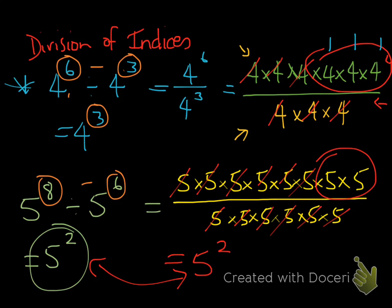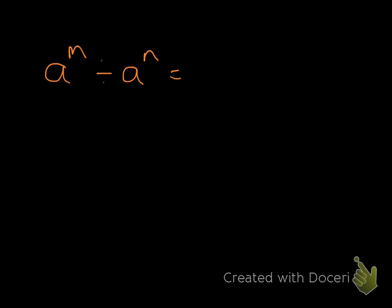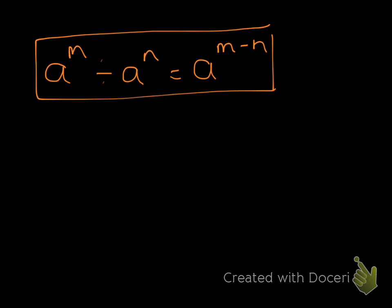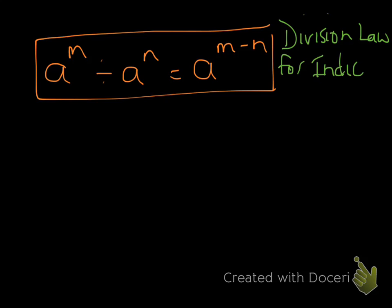So we can come up with a new law that represents quotients or divisions of indices. Just like I did with the multiplication law, we use variables a, m, and n. The new law is: a to the power of m divided by a to the power of n equals a to the power of m minus n. This is the division law for indices, and we can apply it for any values of these variables.